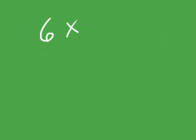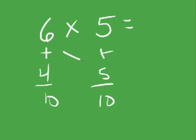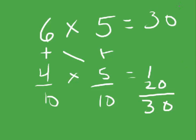6 times 5 equals 6 plus 4 equals 10. 5 plus 5 equals 10. 6 minus 5 equals 1. So you can see this one's going to be a little bit trickier. 4 times 5 equals 20. So if I add that together, I get 6 times 5 equals 30.